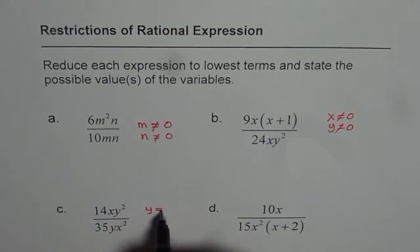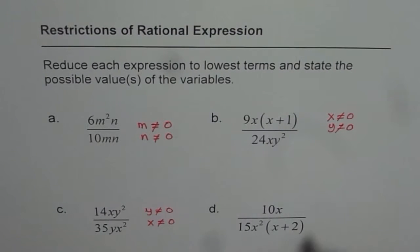Here, Y is not equal to 0 and X is not equal to 0. These are the values which are not permitted for the given expressions. Here, X is not equal to 0 and this will be 0 for X equals to minus 2. So these are the restrictions.